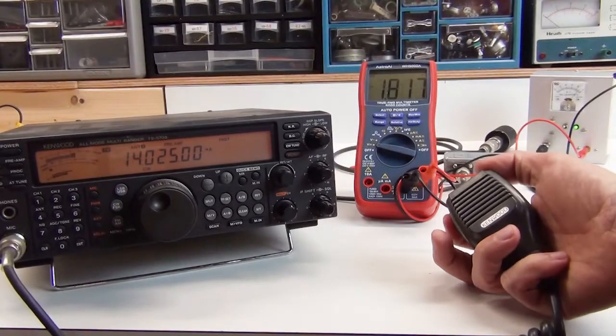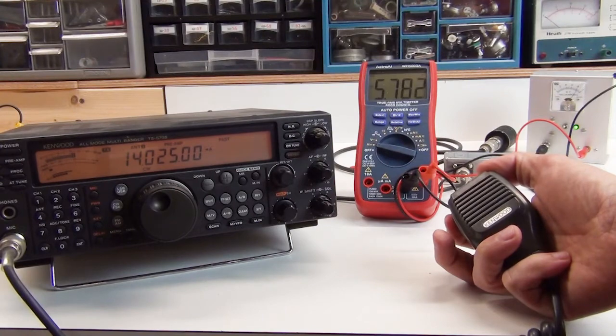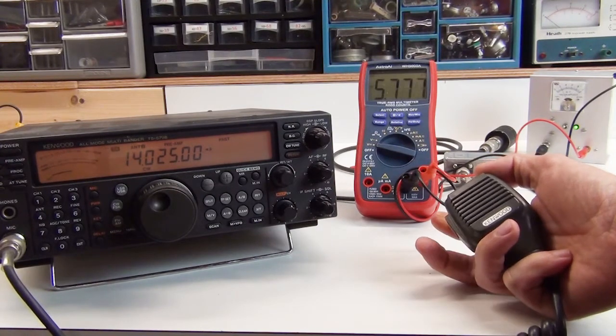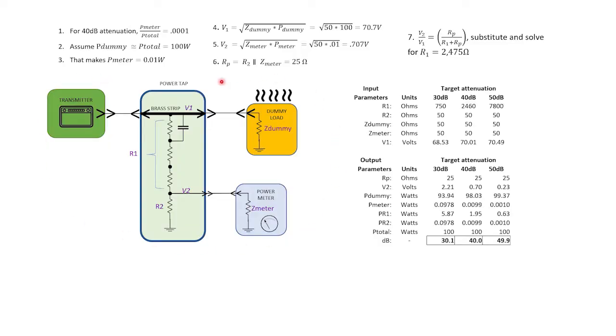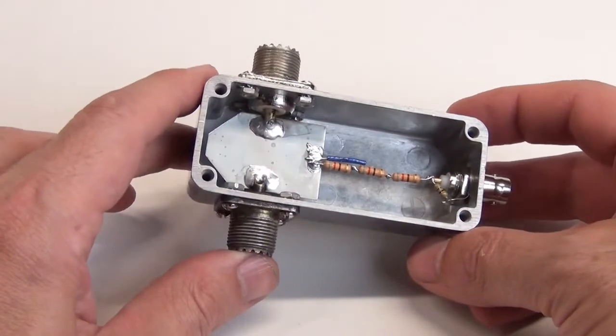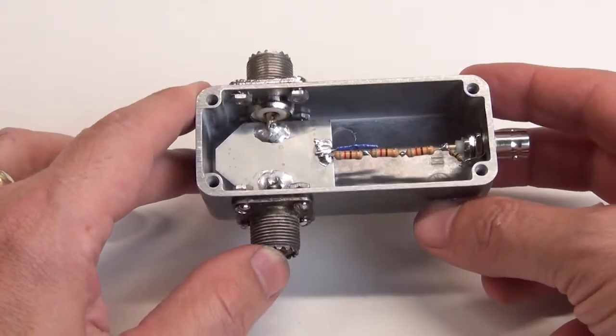An RF power tap is an essential lab accessory for accurately sampling a transmitter's output. I'll show you the calculations behind how it works and I'll build one from scratch using a well-known and solid design.